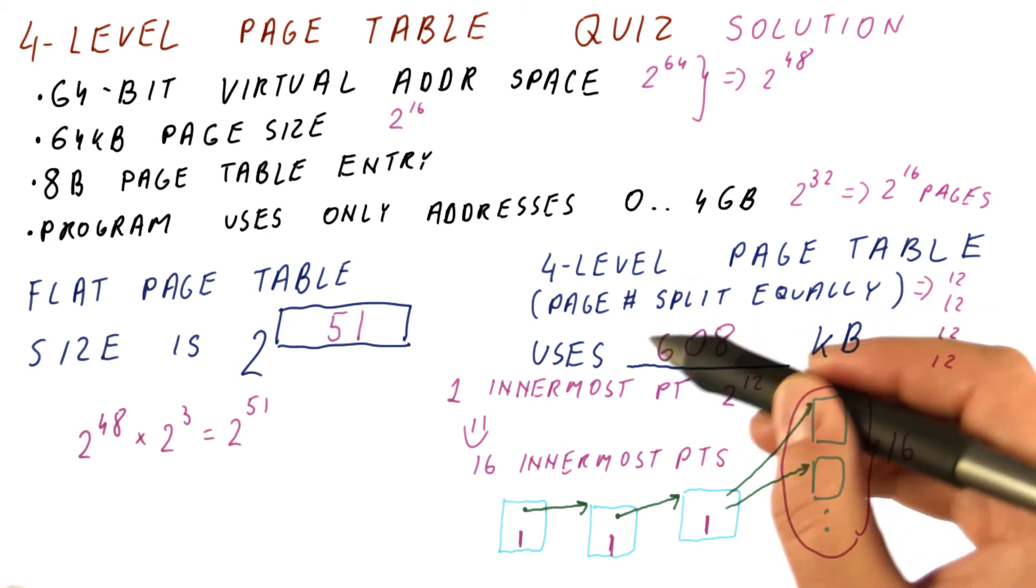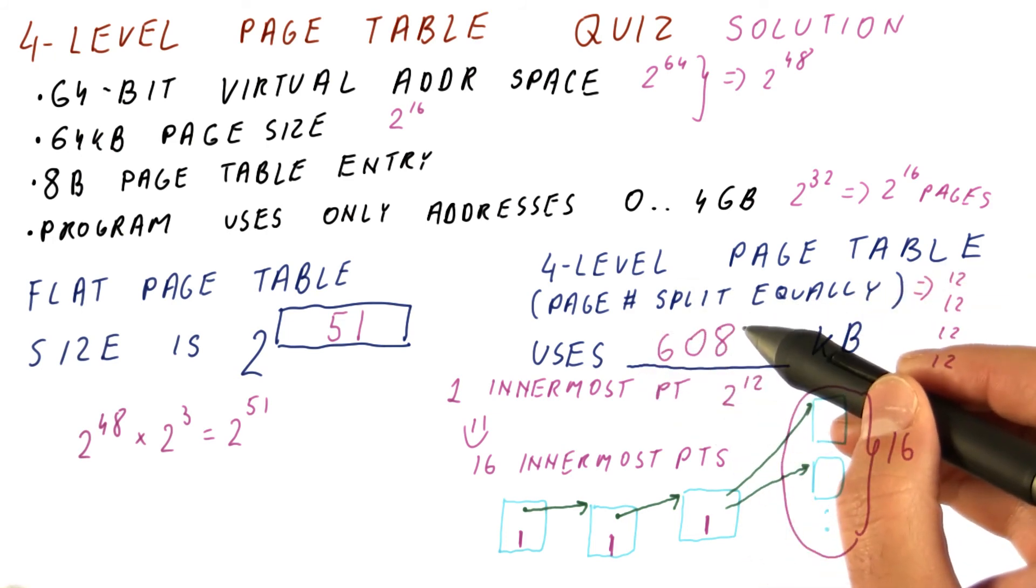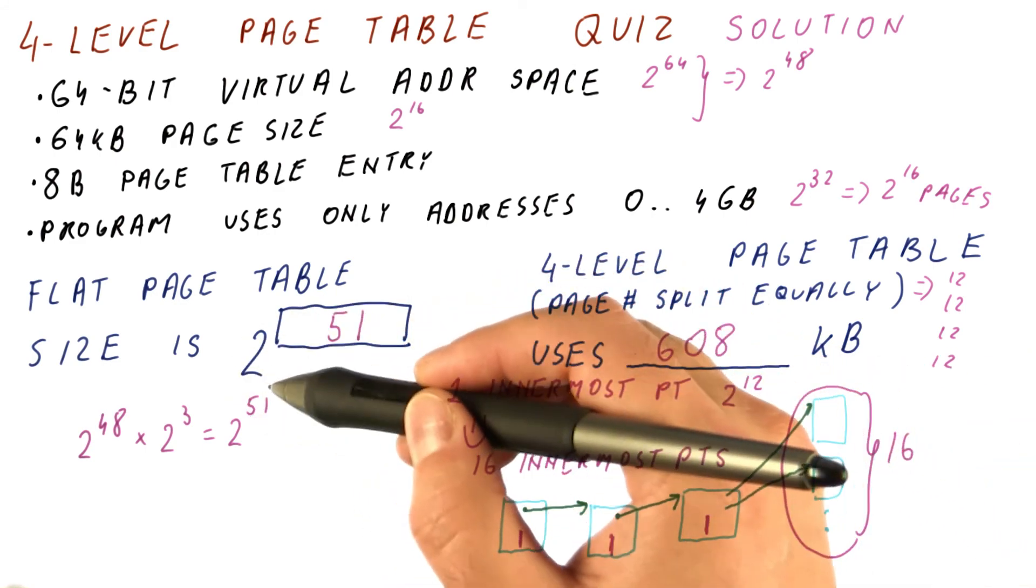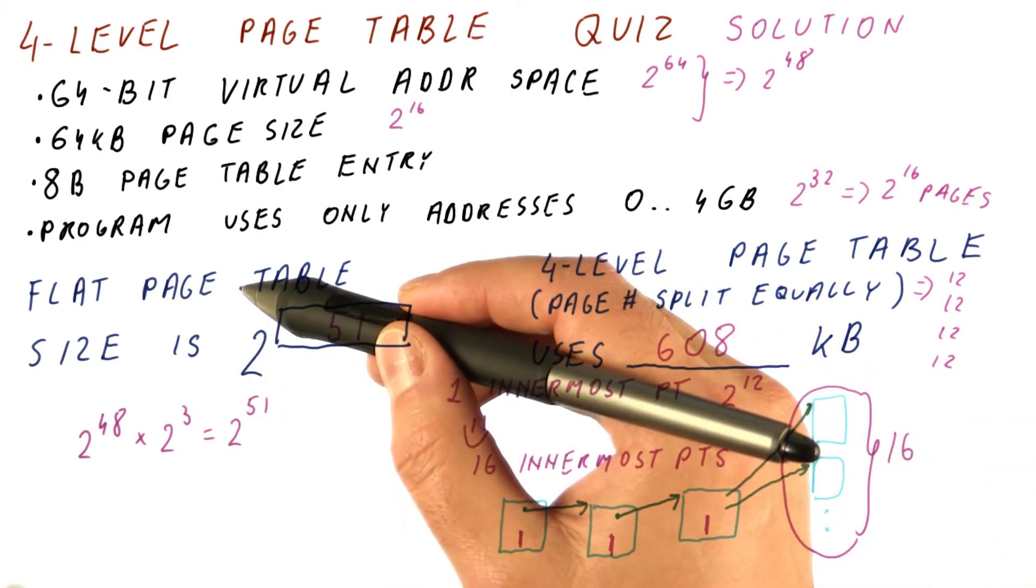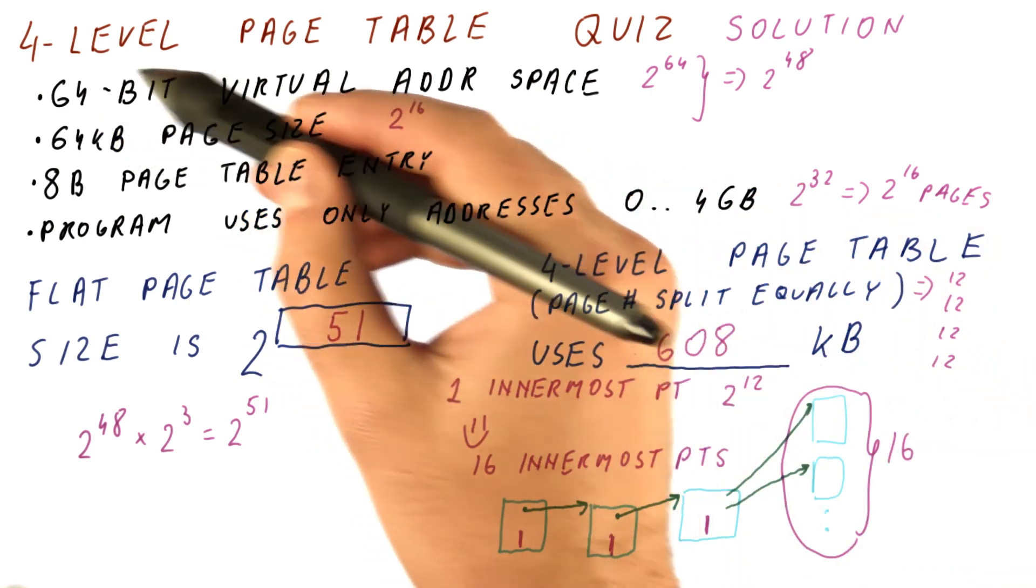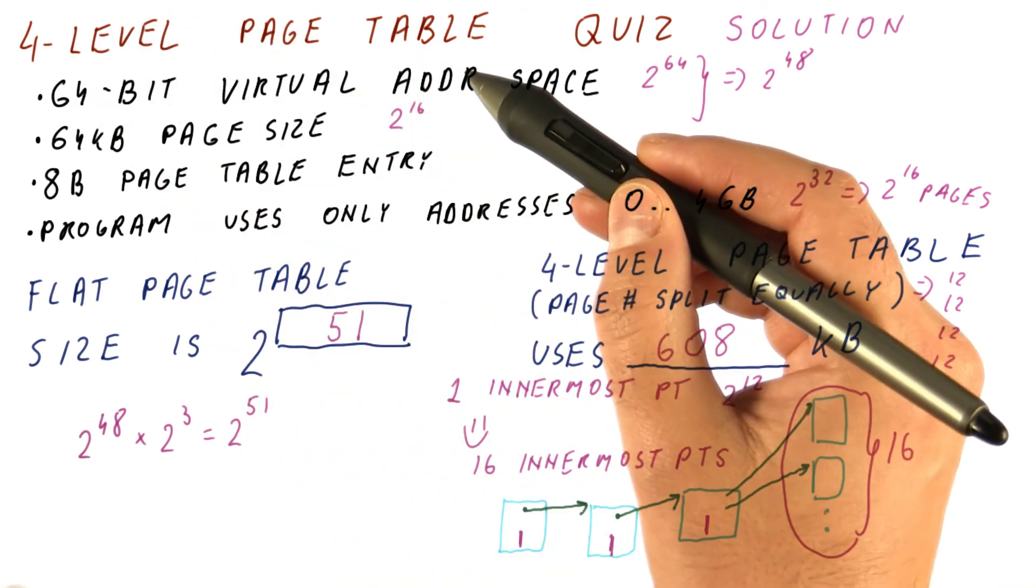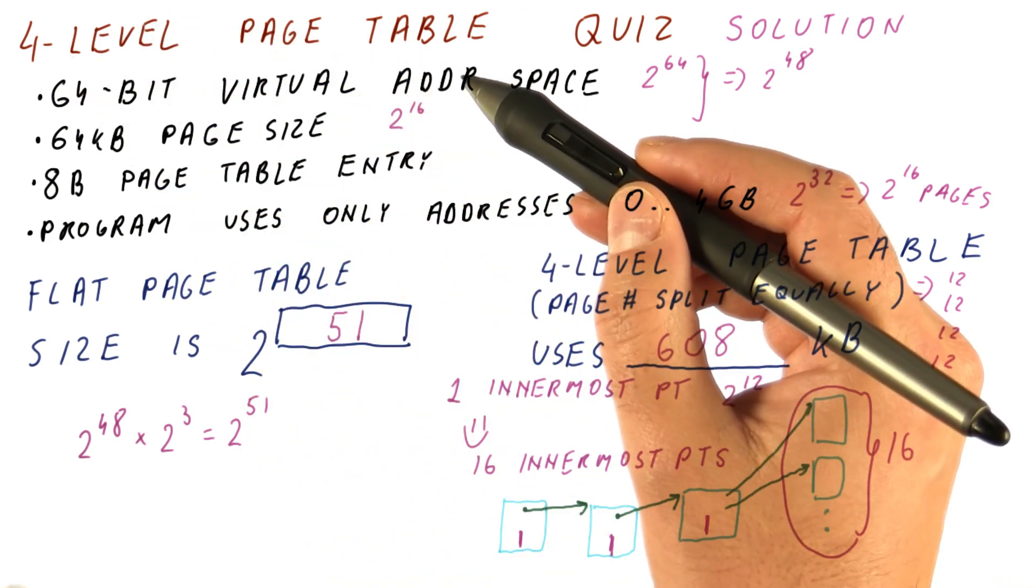As you can see, this is only 608 kilobytes, less than a megabyte. Compare that to many, many terabytes of page table for a flat page table organization. This is why all 64-bit X86 processors nowadays use multi-level page tables of at least three levels.